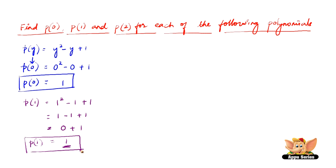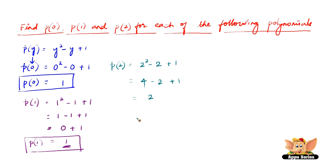Now let us find p of 2. All we have to do is substitute 2 in the place of y, so it becomes 2 squared minus 2 plus 1, which is 4 minus 2 plus 1. 4 minus 2 is 2, plus 1 gives 3. Therefore, p of 2 is 3.